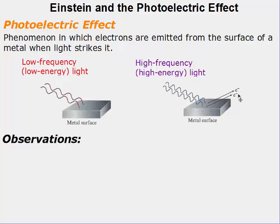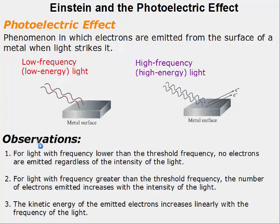We'll see this more in our next unit when we talk about PES graphs. The observations that were made were: light with a frequency lower than the threshold frequency — no electrons are emitted, regardless of the intensity of the light. When light with a frequency greater than the threshold frequency occurs, the number of electrons emitted increases with the intensity of the light. And the kinetic energy of the emitted electrons increases linearly with the frequency of the light. So the higher the frequency, the more electrons come off.